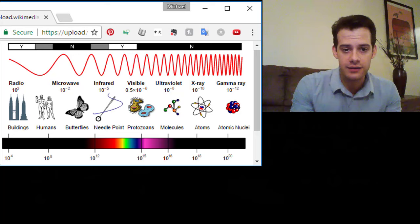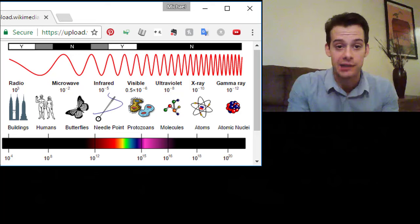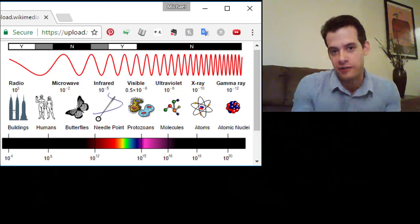Then when we get a little smaller we get to infrared and we can't see infrared light and then finally we get to the visible spectrum. It's a pretty narrow section where we have red, if you're familiar with the mnemonic ROYGBIV red, orange,